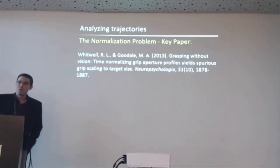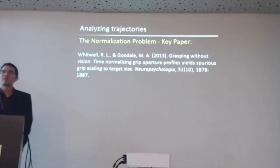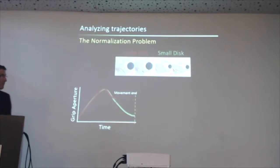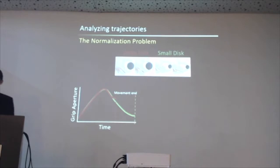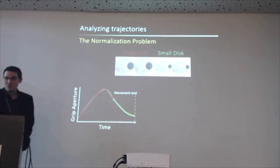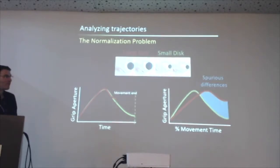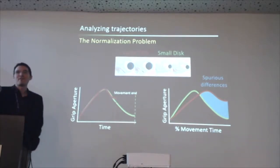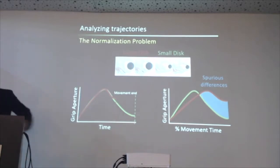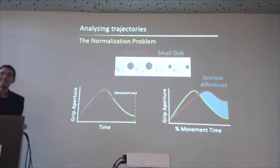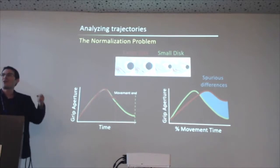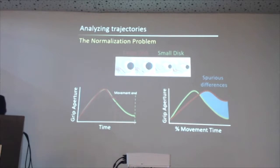Mel and his student Rob Whitwell have a very nice paper showing exactly why this is a huge problem. They do it in the context of grip apertures — imagine you're grabbing a large disk or a small disk, and the only thing that differs is that closing your hand on a small disk takes longer but everything else is the same. Well, you take those two trajectories, normalize them by time, and what Mel and Rob identified is what they call spurious differences — simply by stretching one of the things that was different in time to match the other, you introduce something that wasn't there in the first place. We got exactly the same thing in our reach trajectories — those that took longer were actually shifting the pattern of deviation to parts of the trajectory it did not occur in.